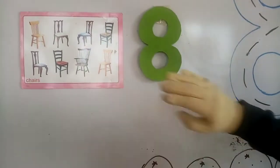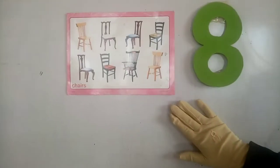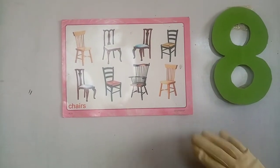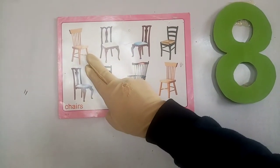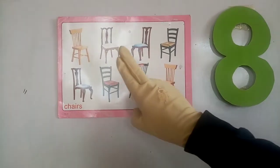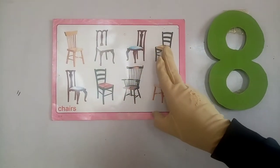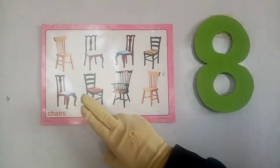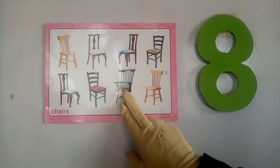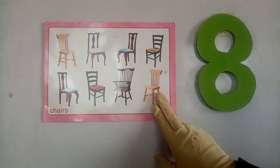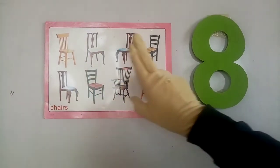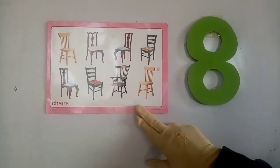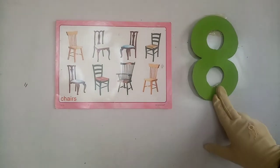Okay, look here. How many chairs are here? Count with your teacher. One, two, three, four, five, six, seven, eight. How many chairs are here? Eight. How many chairs are here? Eight.